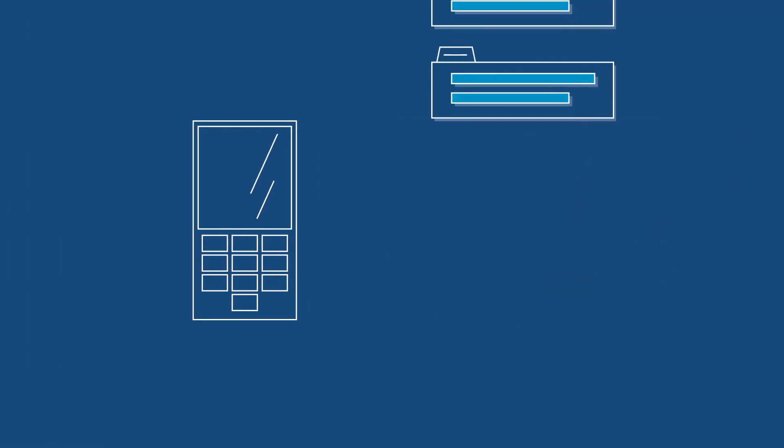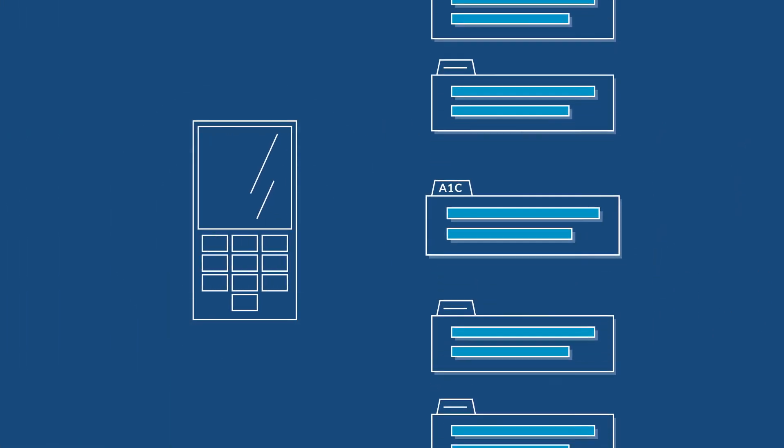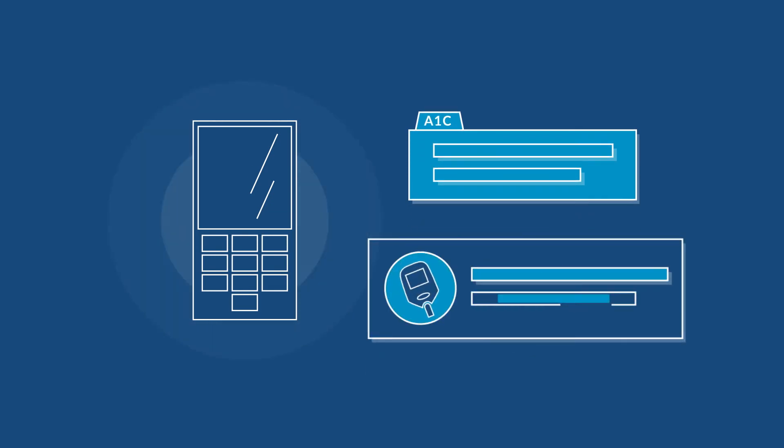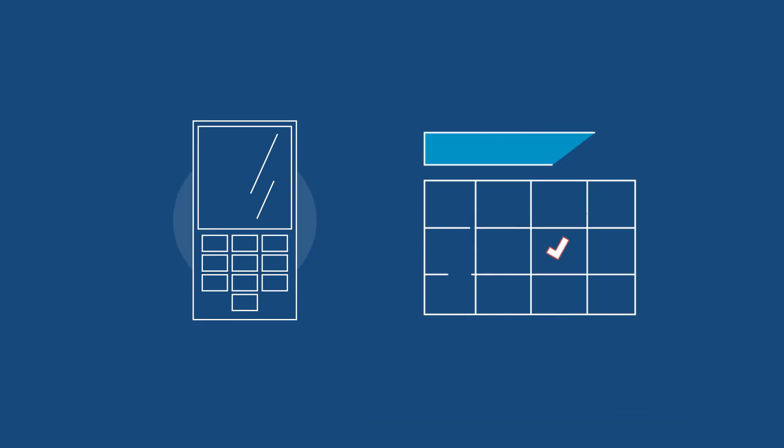I'm calling because our records show you're overdue for an A1C, or blood sugar check. Regular checks help catch any problems early, so they're easier to treat. Can I help you schedule one now?